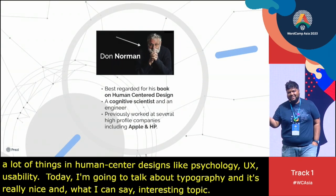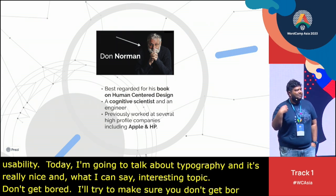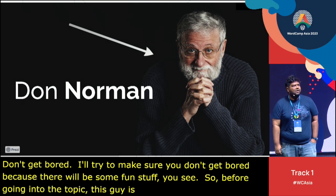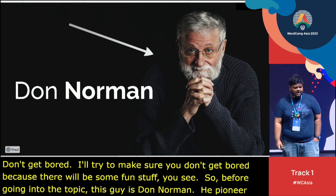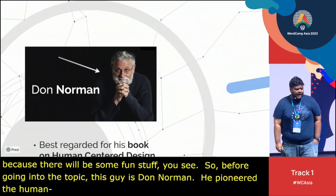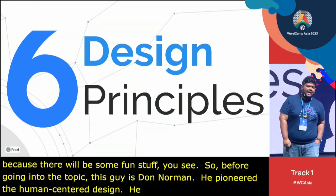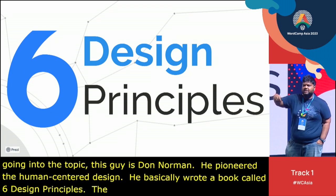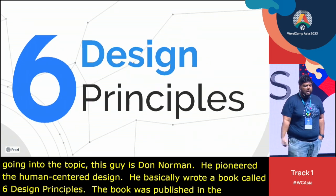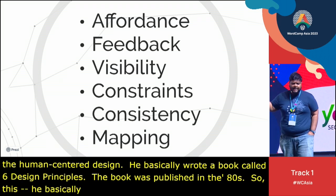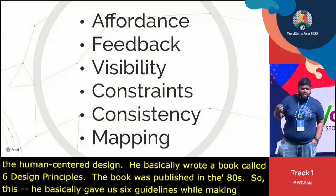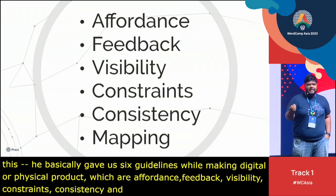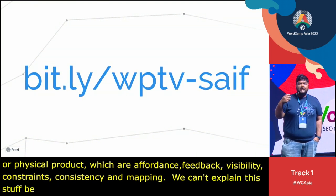Don't worry, I'll make sure you don't get bored — there'll be some fun stuff. Before going into the topic, this is Don Norman. He pioneered human-centered design principles back in the 1980s, working at companies like Apple and HP. He wrote a book called The Design of Everyday Things and gave us six design principles that have stood the test of time: affordance, feedback, visibility, constraints, consistency, and mapping. I have a separate talk on this if you want to check it out.